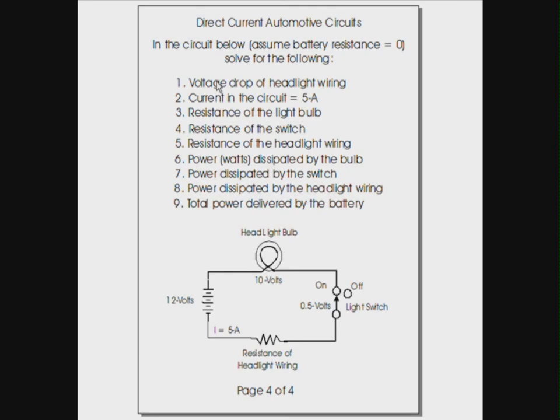So now what you've got to do is solve for the voltage drop of the headlight wiring using Ohm's law. Solve for the resistance of the light bulb using Ohm's law. Solve for the resistance of the switch using Ohm's law. Resistance of the headlight wiring using Ohm's law. The power dissipated by the light bulb using Ohm's law for power. And the total power delivered by the battery. So the power dissipated by the light bulb, the switch, and the wire will equal the power delivered by the battery.